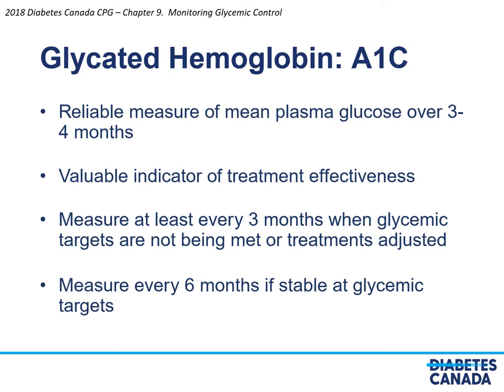First, let's discuss glycated hemoglobin, or A1C. It is a reliable measure of mean plasma glucose over three to four months, and it is known that the majority of contribution comes from the previous one month. It is a valuable indicator of treatment effectiveness. It is measured at least every three months when glycemic targets are not being met or treatments are being adjusted, and may possibly be measured every six months if treatment is stable and the individual is meeting their glycemic targets.